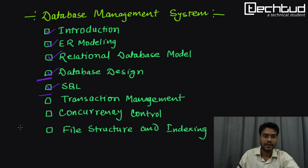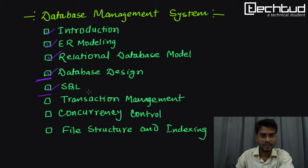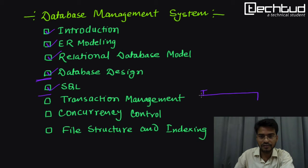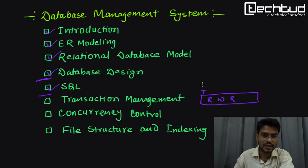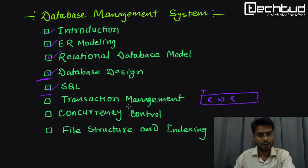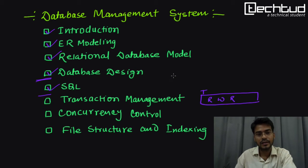In the next section we will learn transaction management. A transaction is a single unit of logical work containing multiple small operations — a sequence of reads and writes. Any transaction is supposed to complete in its entirety; it should either complete fully or not happen at all. We will learn the properties of transactions and how to schedule multiple transactions correctly.